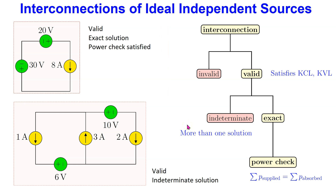In summary, in this video we have looked at interconnections of ideal independent sources. We have seen that such interconnections, which are a circuit theory construct only, can lead to an indeterminate solution. When an exact solution exists, we can also show that the power check is satisfied, and we can simulate the circuit using LTSpice. Thank you for watching.